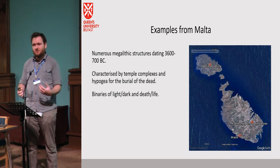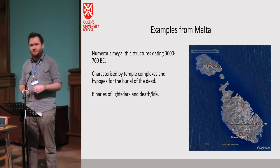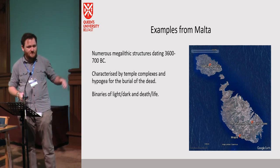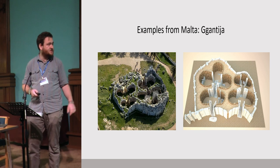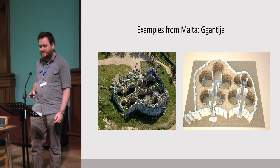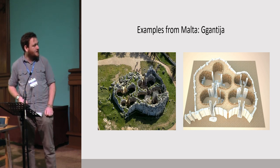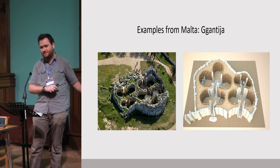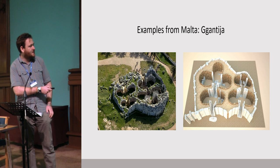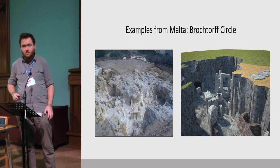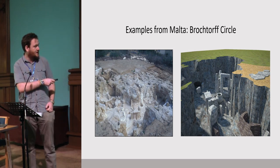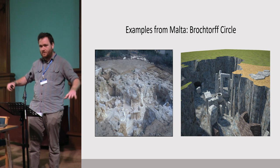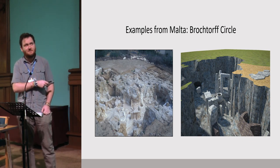The Maltese rituals and beliefs seem to concentrate on binaries, especially the binary of light and dark, which are representative of life and death as well. Two sites I was looking at for this research: Ggantija, which is a temple complex characterized by two different temples side by side — it has no burials and was theoretically used as a sacred place. The other site is the Brochtorff Circle, which is a hypogea — underground, though today the roof has collapsed. Inside it, many hundreds, thousands of skeletons have been found.